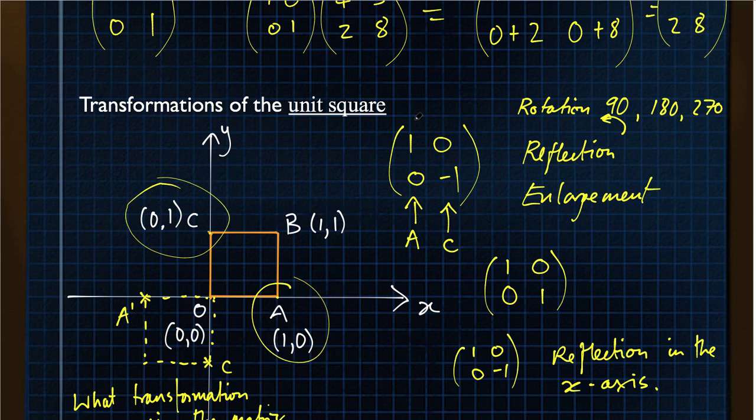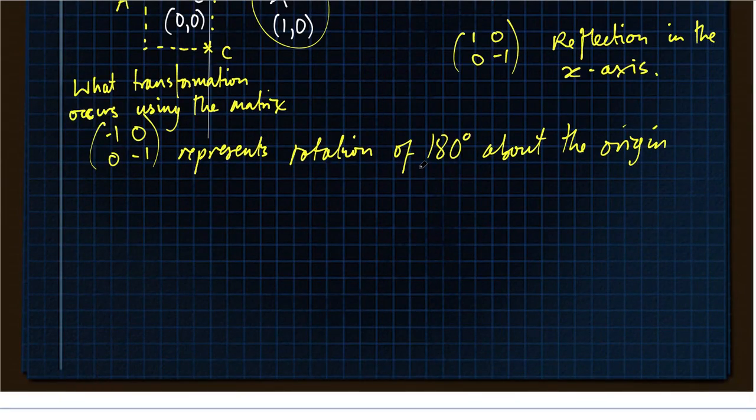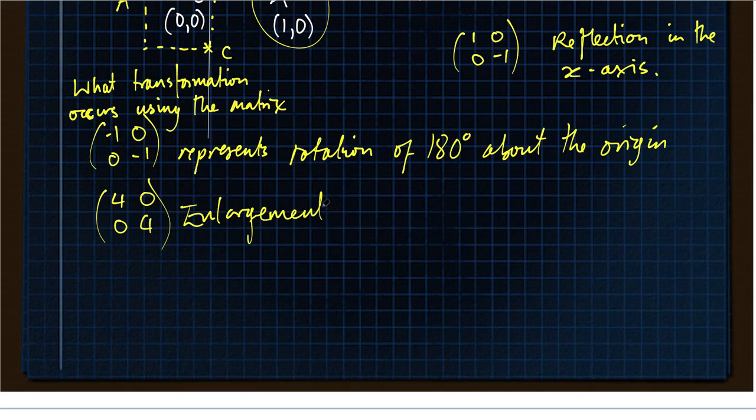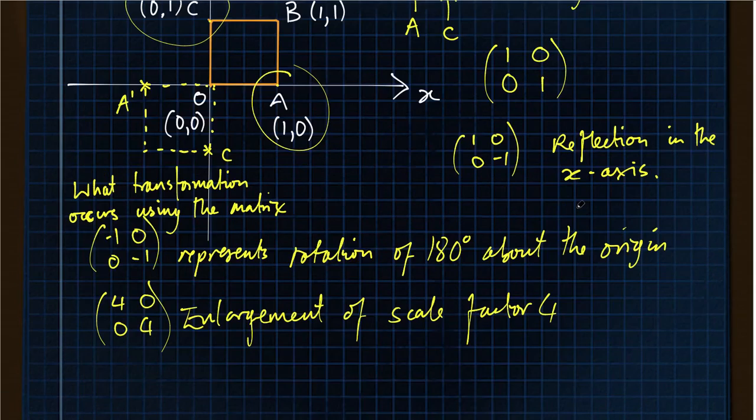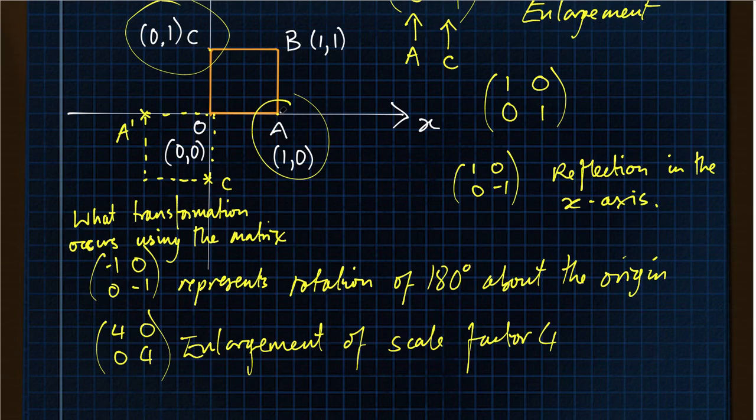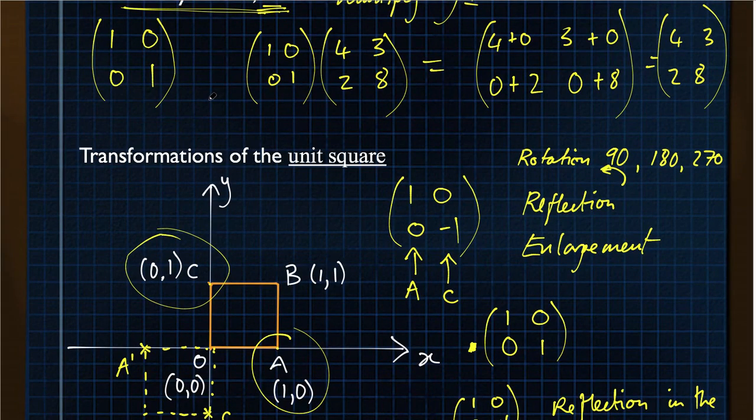An enlargement will have numbers bigger than one, so that represents an enlargement of scale factor four. And looking again at that, the details of that, point A, 1, 0, is replaced by a point A, 4, 0, so four times bigger over here. And point C, instead of being 0, 1, is 0, 4, so all the way up there. And you can now get a square that's been enlarged by a scale factor of four.